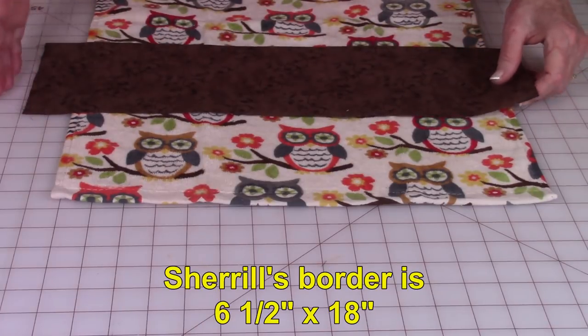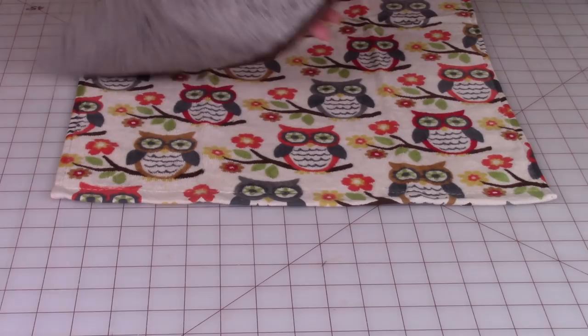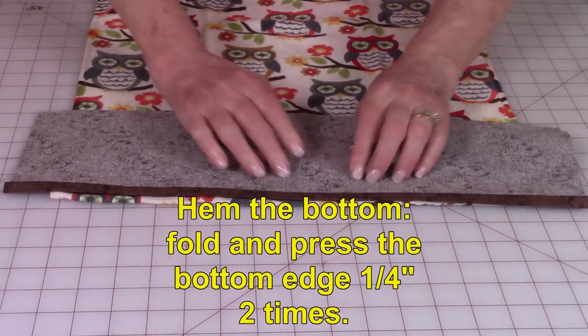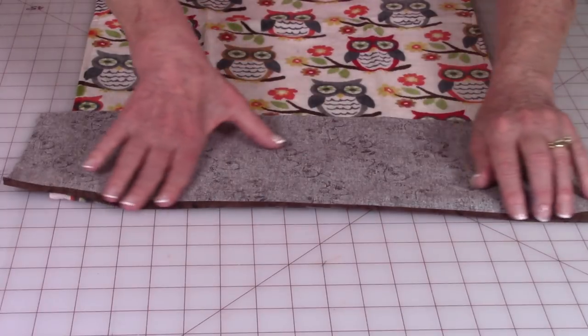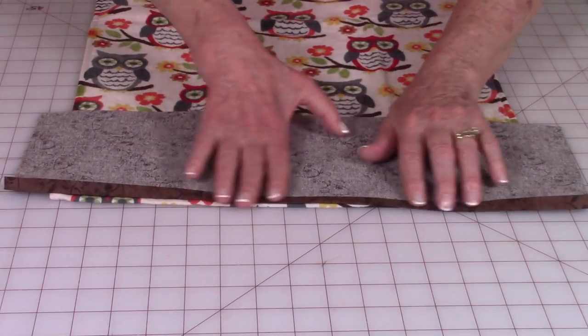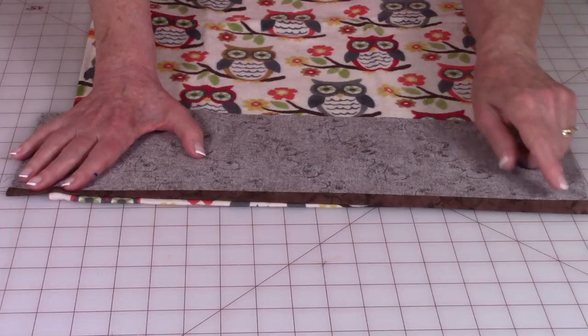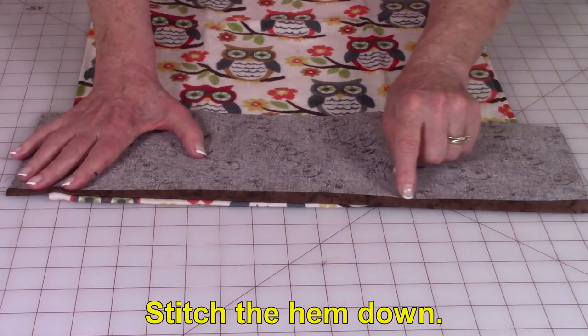After you've cut your piece of fabric out, go to your ironing board and fold the bottom edge over a quarter of an inch and fold again a quarter of an inch. Then stitch along this folded line all the way across.